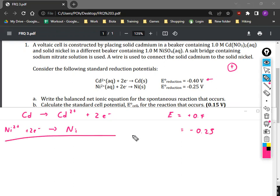So if we combine the two equations together, cancel out the electrons, you'll get Cd plus nickel ion, and then cadmium ion plus nickel, and that'll give you 0.15 volts.